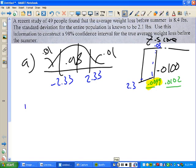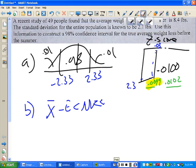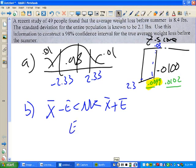Now part B is a straight memorized deal. It's x bar minus E is less than mu, which is less than x bar plus E. And E is equal to z times sigma over the square root of n.